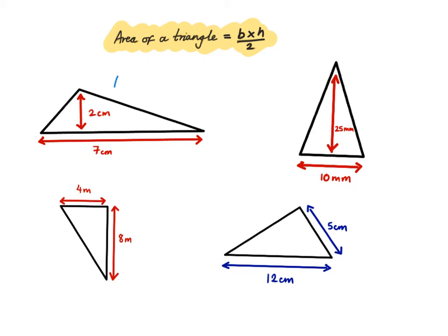The height of this triangle is 2 centimetres. Therefore, the area of this triangle will be equal to the base, which is 7, times 2, which is the height, divided by 2, which is just equal to 7 centimetres squared.